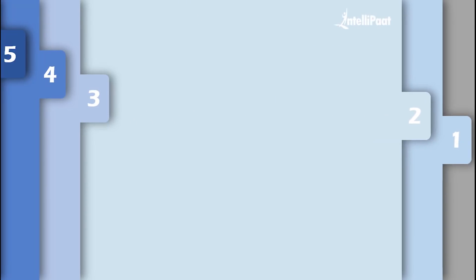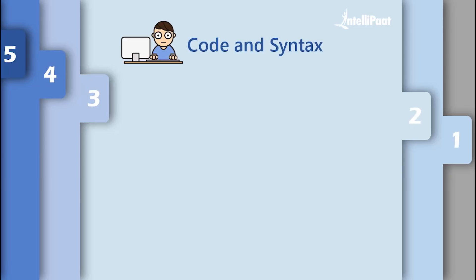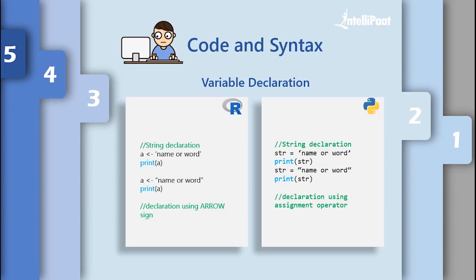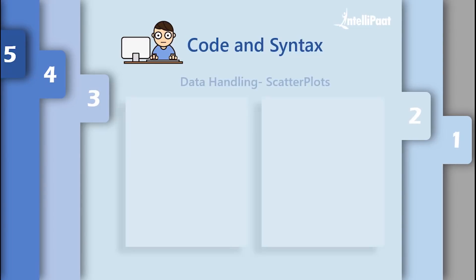Moving on to code and syntax, I'll cover variable declaration, data handling with scatter plot visualization, and class plot graphics. For variable declaration, taking the case of strings: R uses a similar implementation to the S programming language, which uses arrow signs to initialize variables. These arrows can be used right-to-left or left-to-right to indicate assignment direction. Python uses an assignment operator to initialize variables. R developers felt it was better to show the direction of assignment rather than just using an operator, which could confuse new programmers.